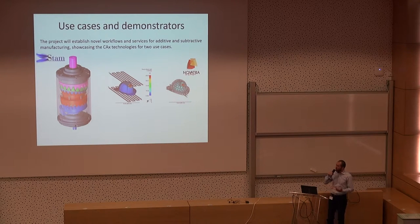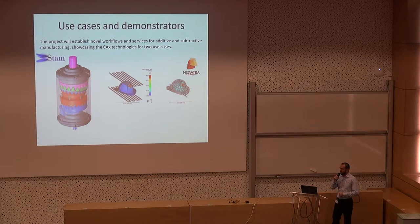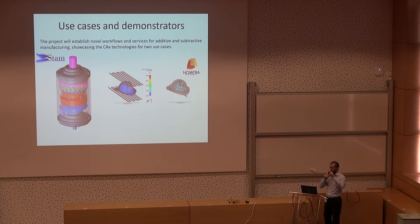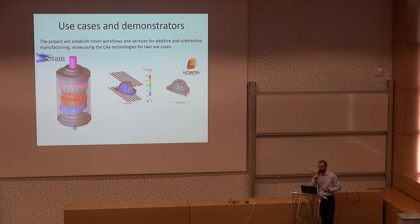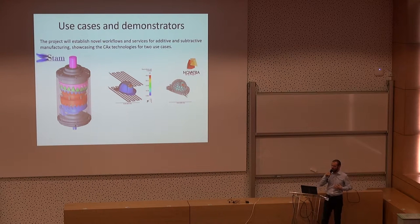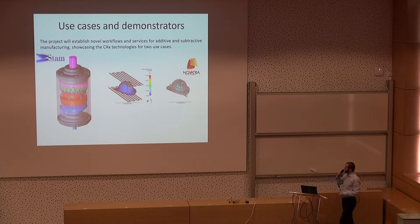We have two industrial partners that bring use cases to the project. The first is an Italian company that has patented a new gear capable of reducing speed by factors up to 300:1 in a very small space. It is extremely difficult to fabricate with standard technology, so they are very interested in using additive manufacturing to produce these parts. The key challenge is that friction is an intrinsic issue — gears must move together and friction cannot be tolerated.